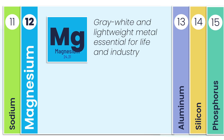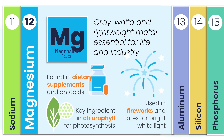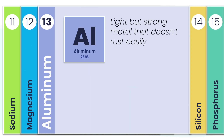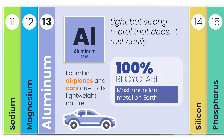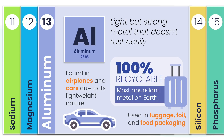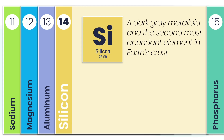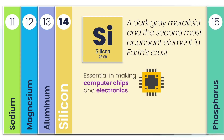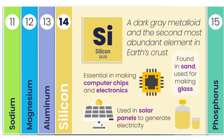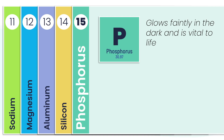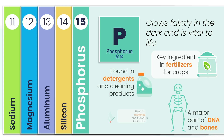Magnesium is a gray-white light metal, vital for both life and industry. It's found in supplements, inside green plants, and even packed into fireworks that light up the sky. Aluminum is light, strong, and built to last — it resists rust and can be recycled over and over again. You'll see it shaping planes, cars, packaging, and a ton of everyday essentials. Silicon is a dark gray metalloid that powers modern tech — at the heart of computer chips, soaking up sunlight in solar panels, and even hiding in plain sight in the sand that becomes glass. Phosphorus can glow faintly in the dark, but more importantly it plays a vital role in life. You'll find it in fertilizers, your DNA and bones, cleaning products, and even matches.